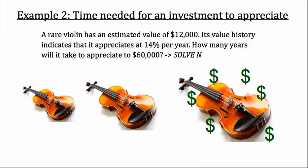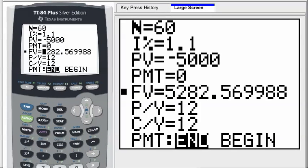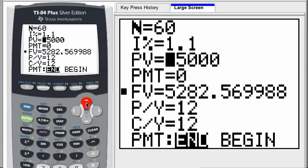Example number two. You've got a rare violin. Let's just say it's a Stradivarius or something. It has an estimated value of $12,000. Its value history indicates it appreciates at 14% per year. How many years will it take to appreciate to $60,000? Solve for N. Let's say that you're one of these people that collect stuff not because you're truly interested in the craftsmanship, but you just want to make money off of it. So you buy stuff, you hold onto it, and then you sell it later. Let's go to our Time Value Money Solver app again.